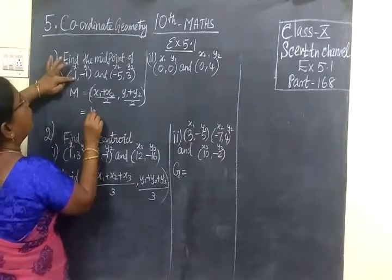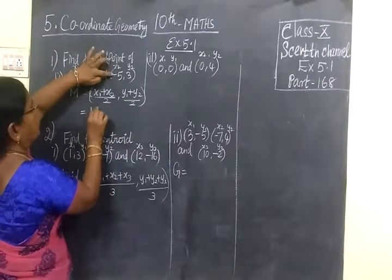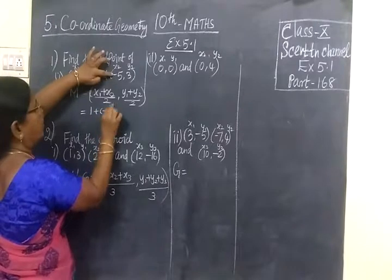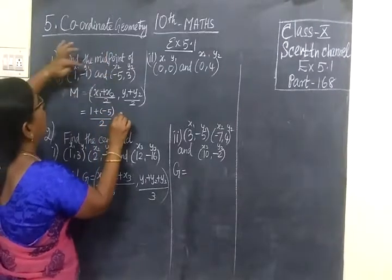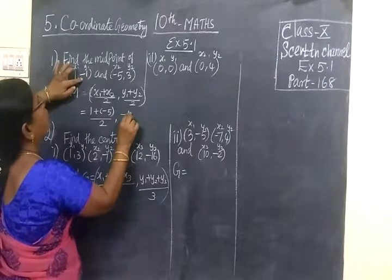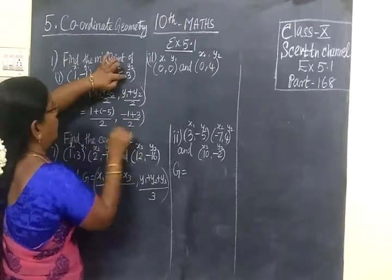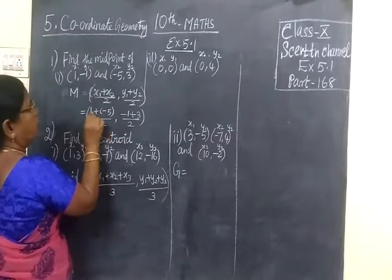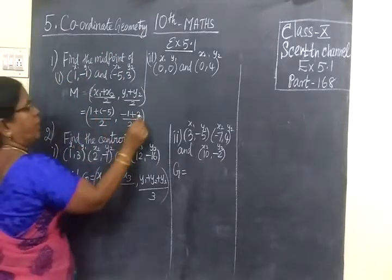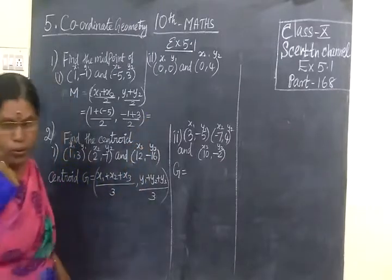So x1 plus x2, x2 is minus 5 by 2, y1 minus 1 plus y2, 3 by 2. So this is equal to 1 minus 5, minus 4, so minus 4 by 2.